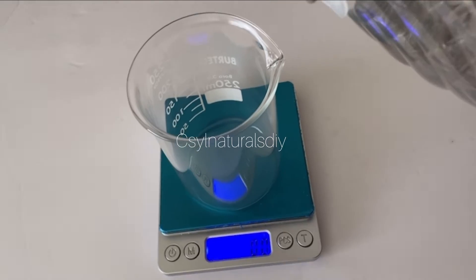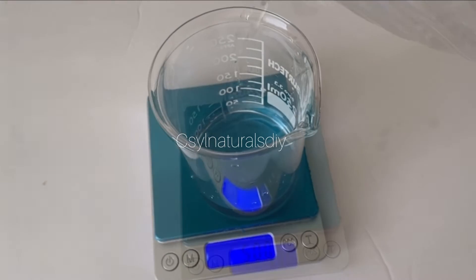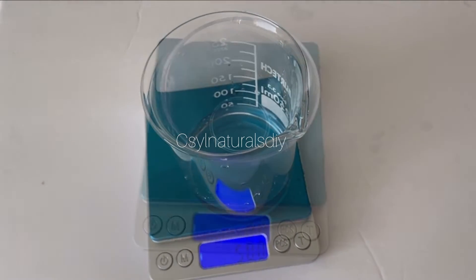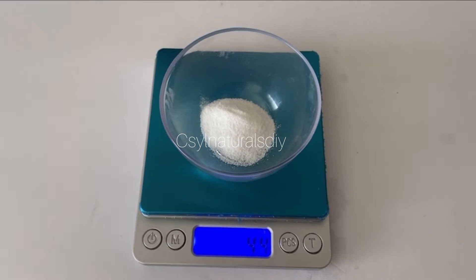So to make this citric acid solution, the first is to measure out my distilled water. In my beaker I'm going to measure out 50 grams of distilled water and next, this is my citric acid.